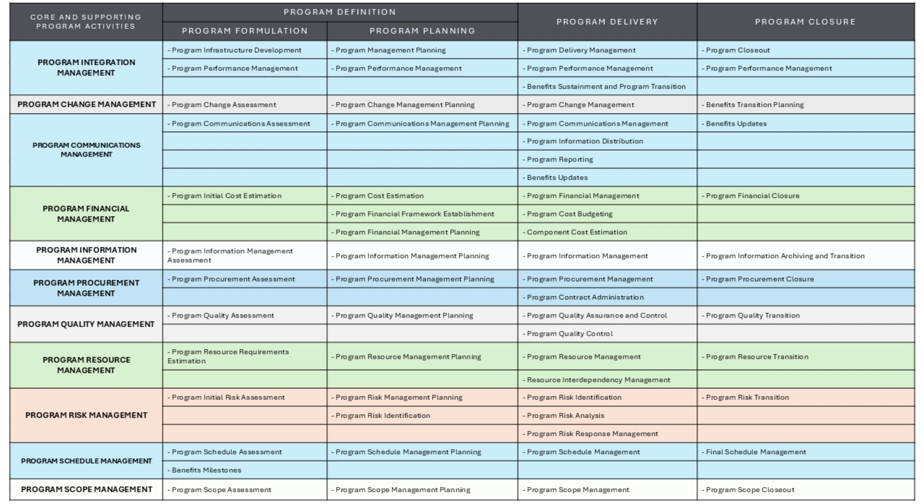Program change management ensures that any changes within the program are assessed, approved, communicated, and implemented without disrupting the program's goals. Program change assessment evaluates the potential impact of any proposed changes on the program's goals, resources, or timelines. Program change management planning creates a plan to outline how changes will be managed, including governance, communication, and execution of changes. During the delivery phase, program change management implements and manages changes seamlessly without causing disruptions. Benefits transition planning ensures that any changes impacting the benefits of the program are considered and planned for, so that the program continues to deliver value even as changes occur.